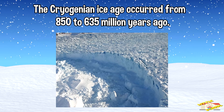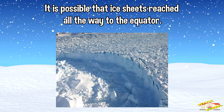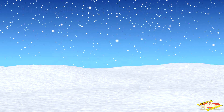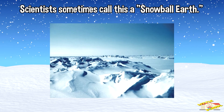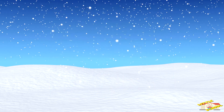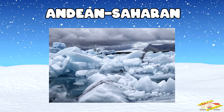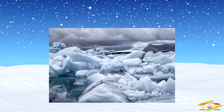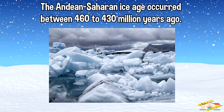The second is Cryogenian. The Cryogenian ice age occurred from 850 to 635 million years ago. It is possible that ice sheets reached all the way to the equator. Scientists sometimes call this a snowball Earth.